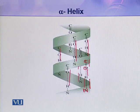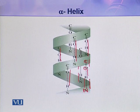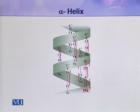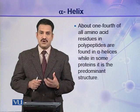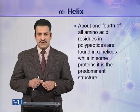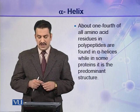The helix uses the full potential of hydrogen bonding of the amino acids. Normally, one amino acid makes a hydrogen bond with the fourth amino acid next to it — the first with the fourth, the second with the fifth, and so on. All amino acids are hydrogen bonded, making this a very stable structure. About one fourth of all amino acid residues in a polypeptide chain are found in alpha helices.